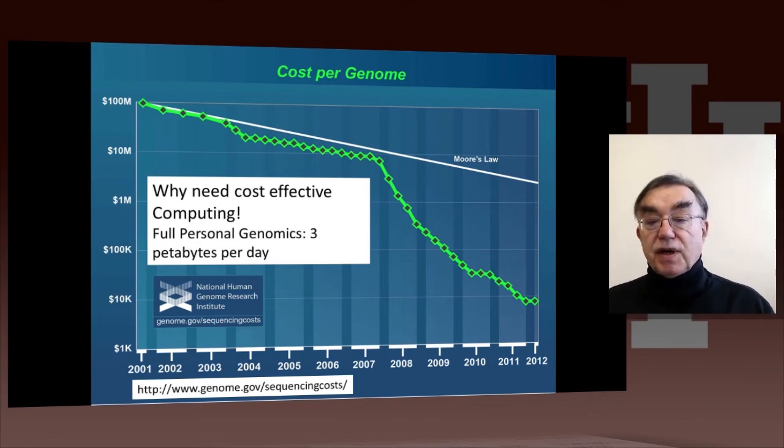Another important feature of this graph is it compares the cost of getting a genome with the performance of computers, Moore's law. Starting in 2008, there was a dramatic decrease in the cost of genome sequencing compared to computing. Now that's over a factor of 100 difference, which points out that the computing cost is getting more significant because the cost of getting the data is going down much faster than the cost of computing.